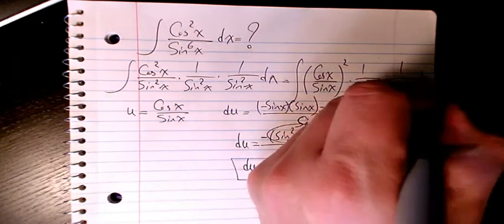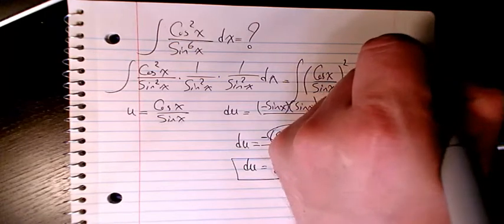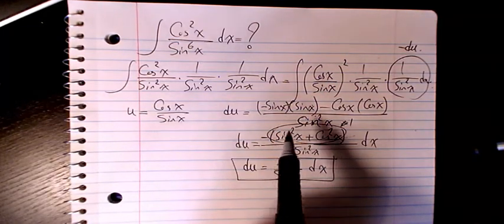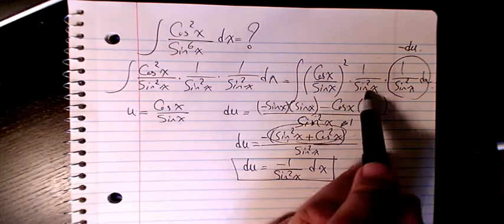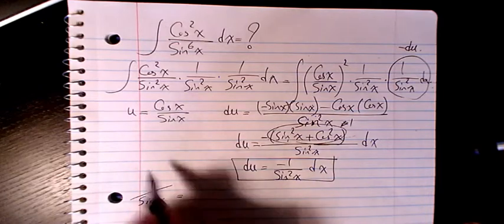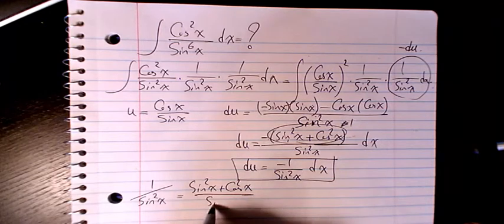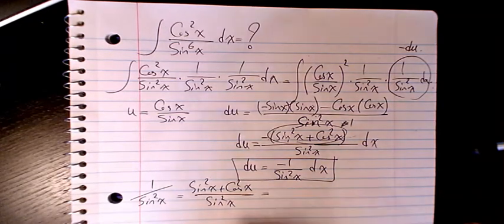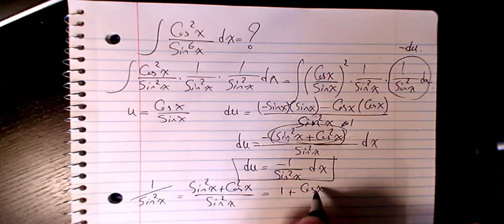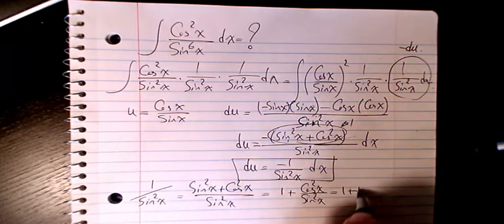So instead of that part I can put negative du. And then for one over sine squared x, I can write sine squared x plus cosine squared x divided by sine squared x, which gives one plus cosine squared x divided by sine squared x — and that is going to be one plus u squared.